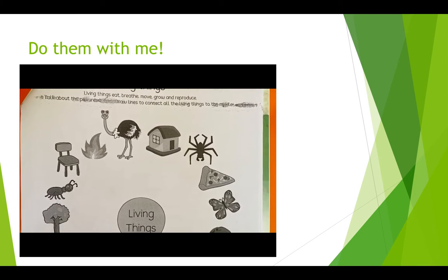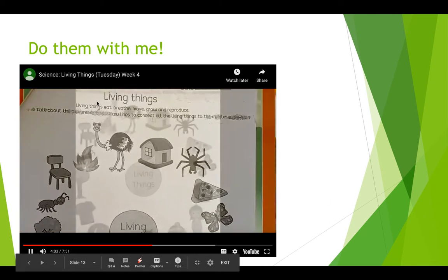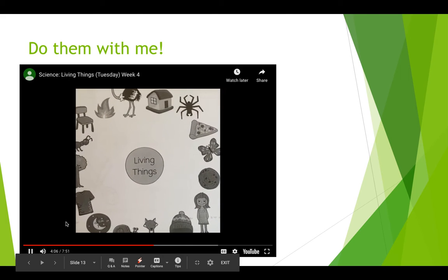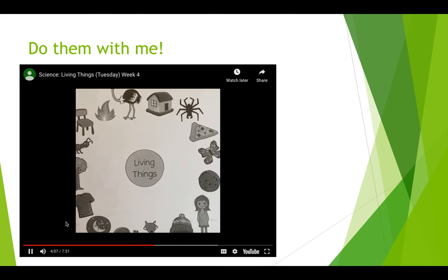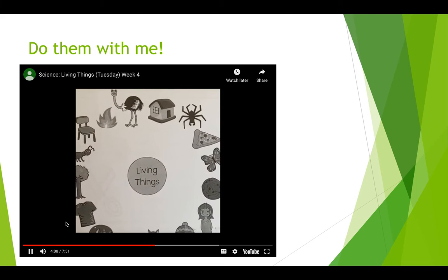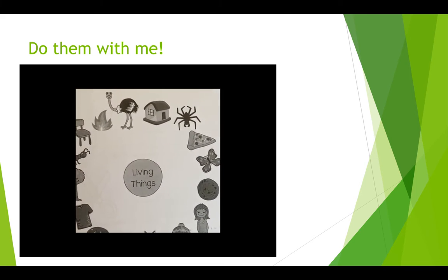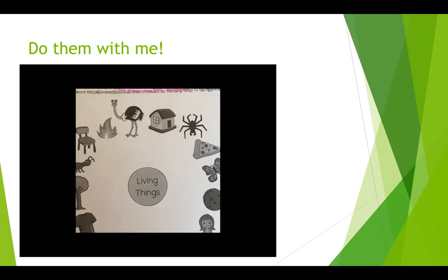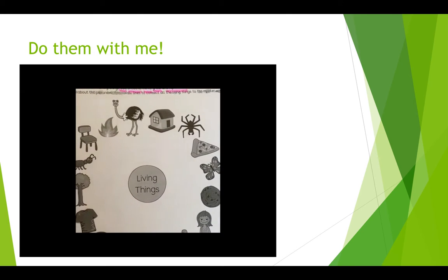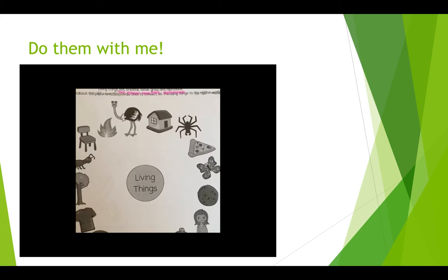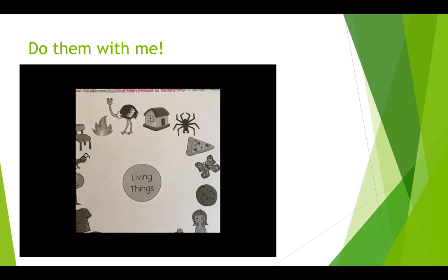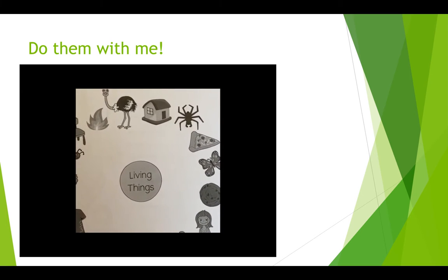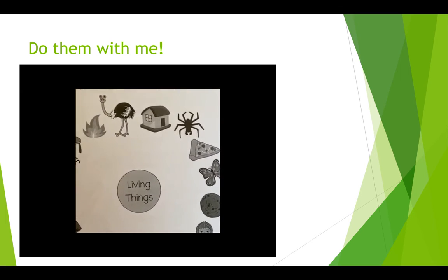All right, my friends. Now we're going to do the next living things sheet. And as it says at the top, living things eat, breathe, move, grow, and reproduce. So we're going to be looking for things that are living because they eat, breathe, move, grow, and reproduce. Let's start at the top — this house.